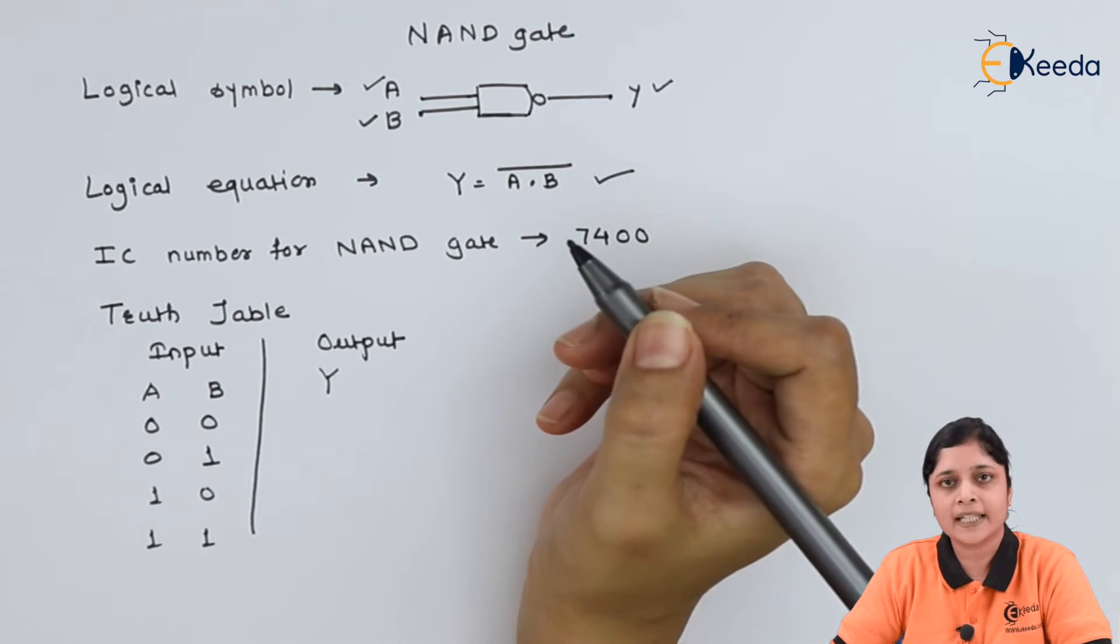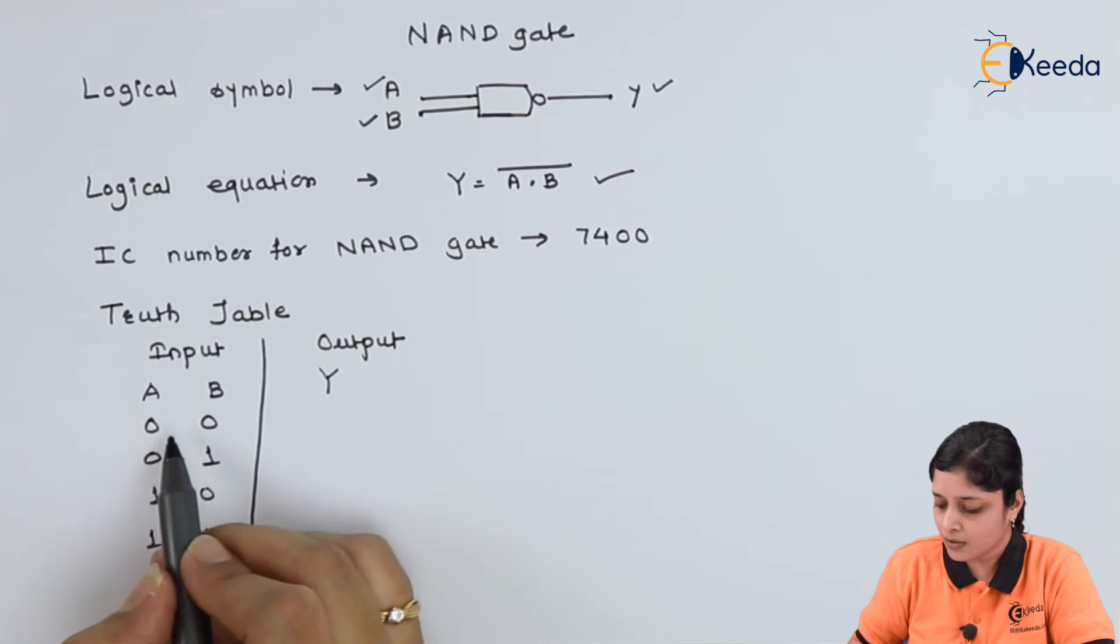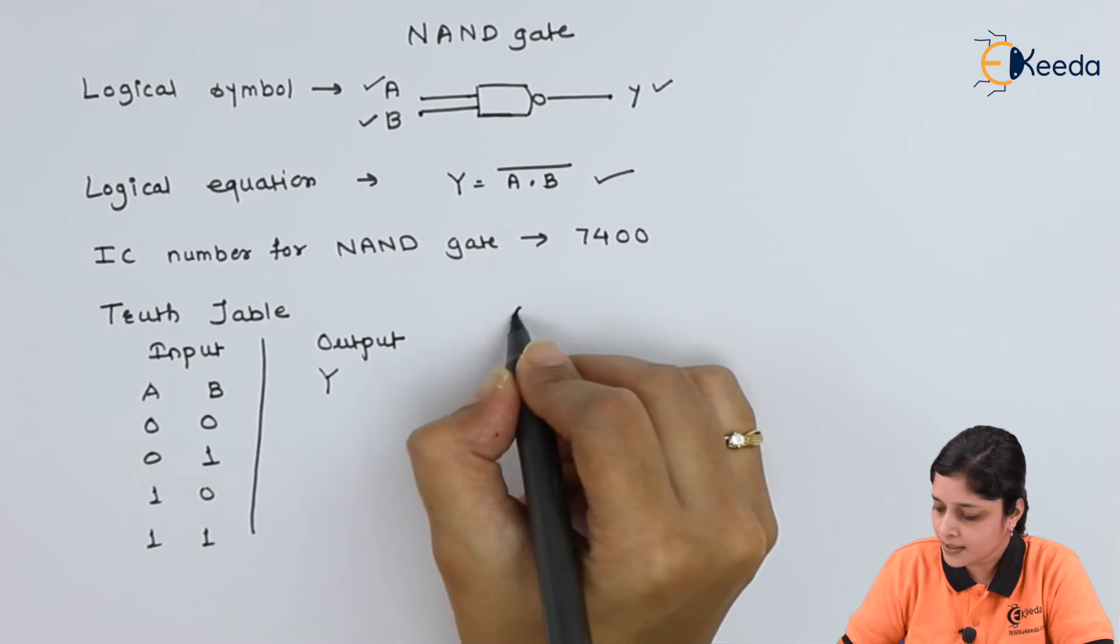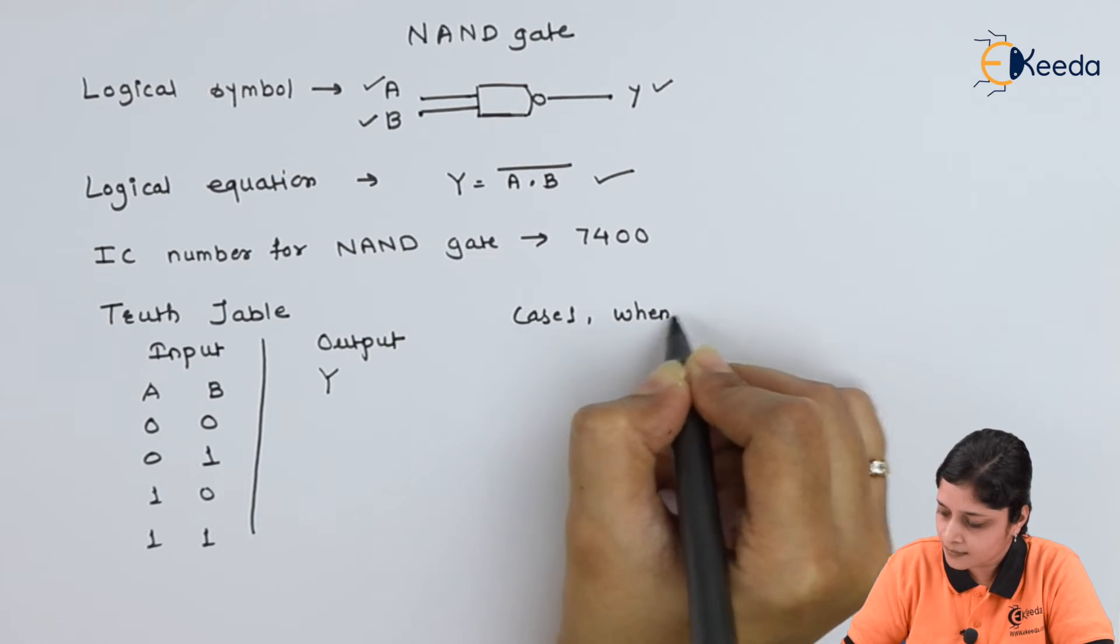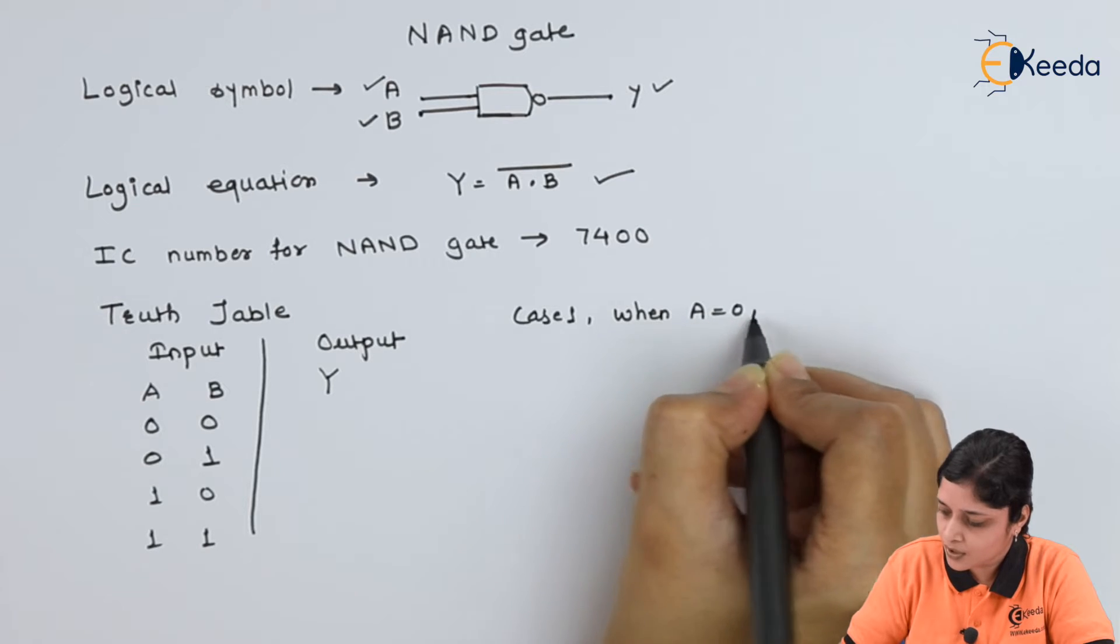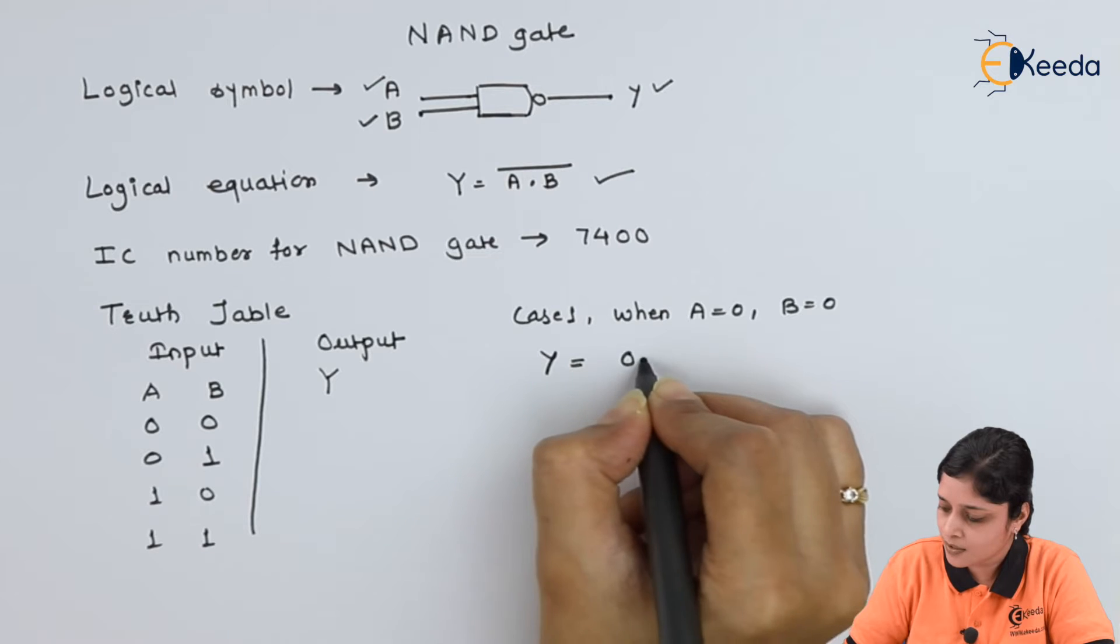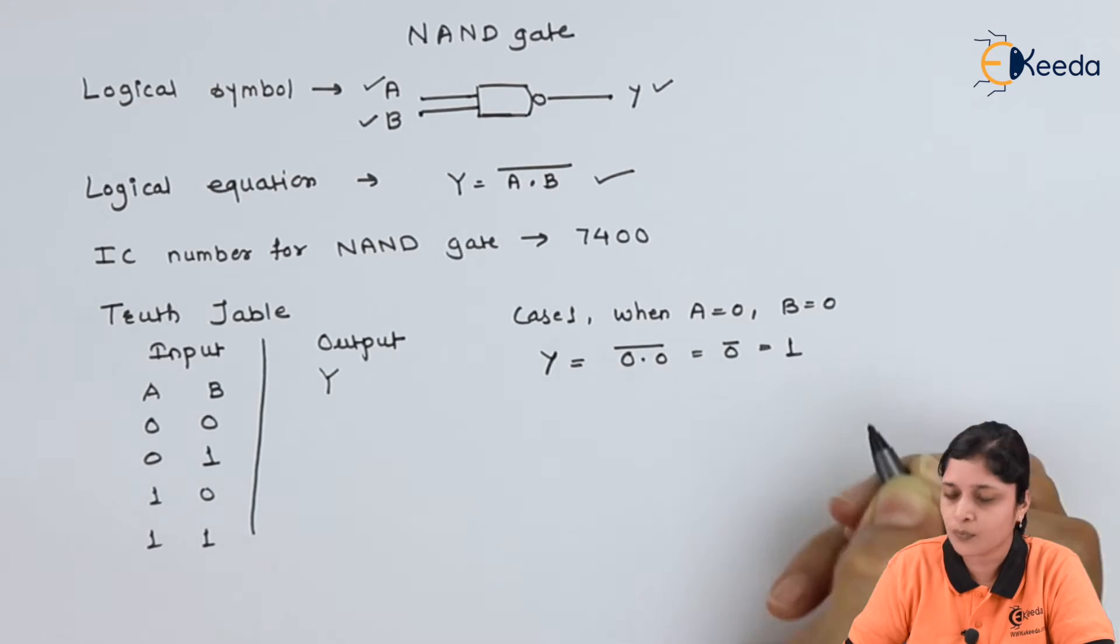So zero dot zero is zero. We will discuss its case one. Case 1: when A equals to zero, B equals to zero, Y equals to what? Zero dot zero bar, that is zero bar. You will get one.